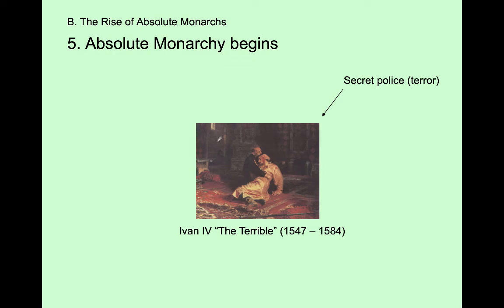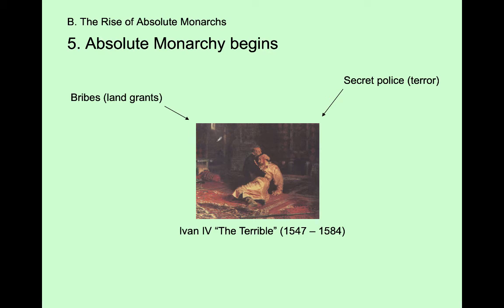Ivan IV wanted to continue Ivan III's centralization policy. He created a secret police — people loyal to Ivan IV who lived among nobility and peasants without being identified. If anyone even whispered something disloyal to the Tsar, it could be reported back and result in arrest and death. This was ruling through fear: everybody kept quiet because they didn't know who they were talking to — it could be a friend, brother, or daughter. Everyone toed the line.